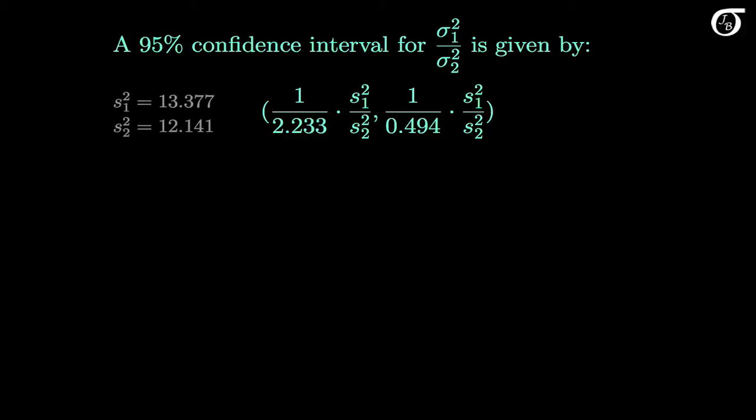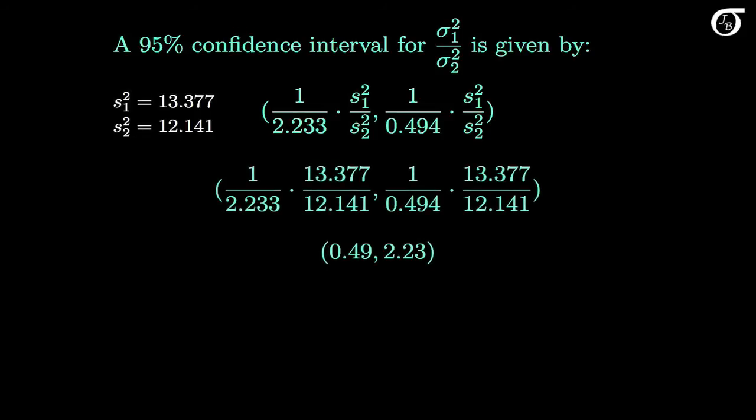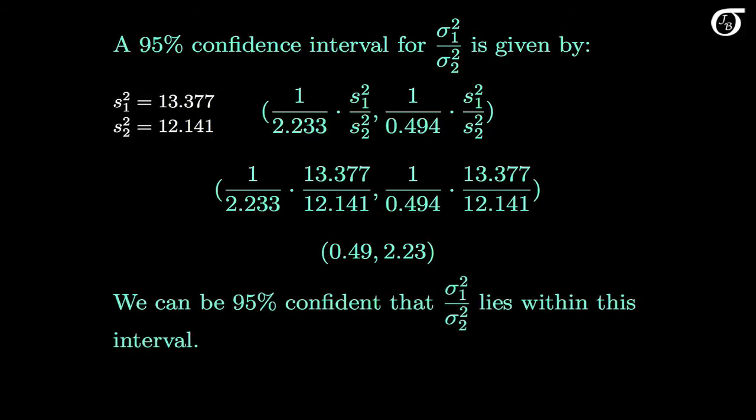The sample variances were 13.377 and 12.141. We put those into the formula, s1 squared over s2 squared, and we end up in the end with a confidence interval of 0.49 to 2.23. And so we can be 95% confident that sigma 1 squared over sigma 2 squared lies between 0.49 and 2.23.